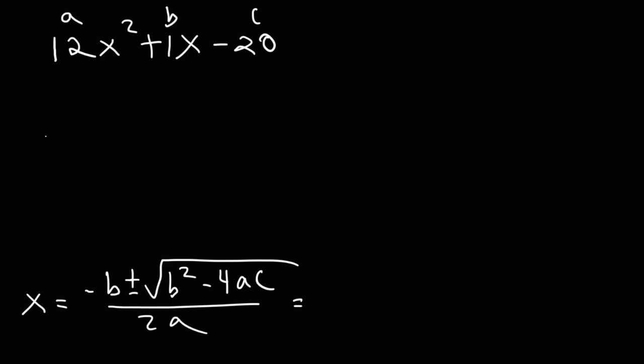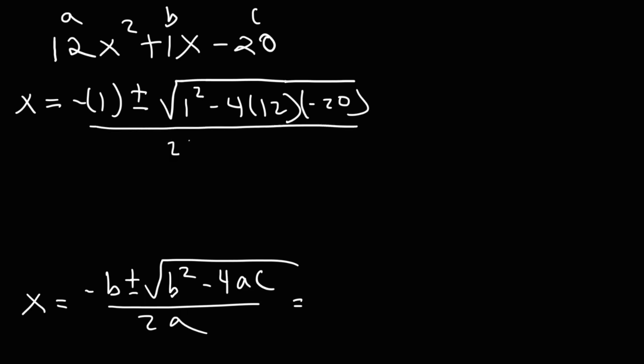So using this formula, let's start over here. It's going to be negative b or negative 1 plus or minus the square root of 1 squared minus 4 times a. a is 12 and then times c, which is negative 20, divided by 2a or 2 times 12.